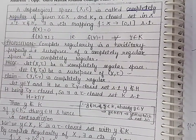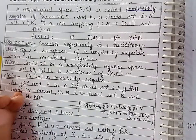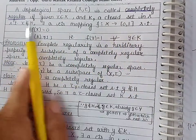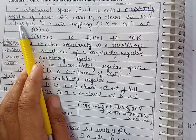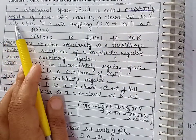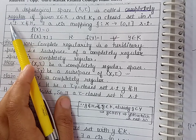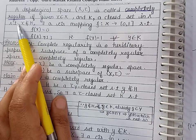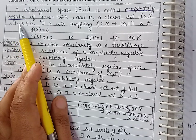Today we'll start section 3 and the first topic is completely regular topological spaces. Let us define what a completely regular topological space is.